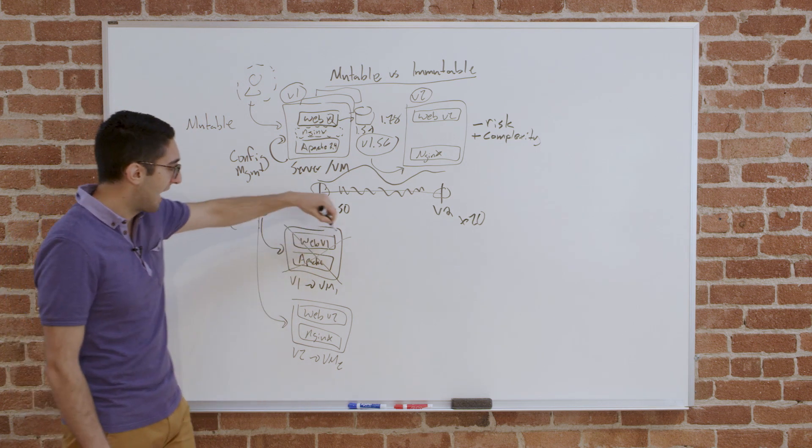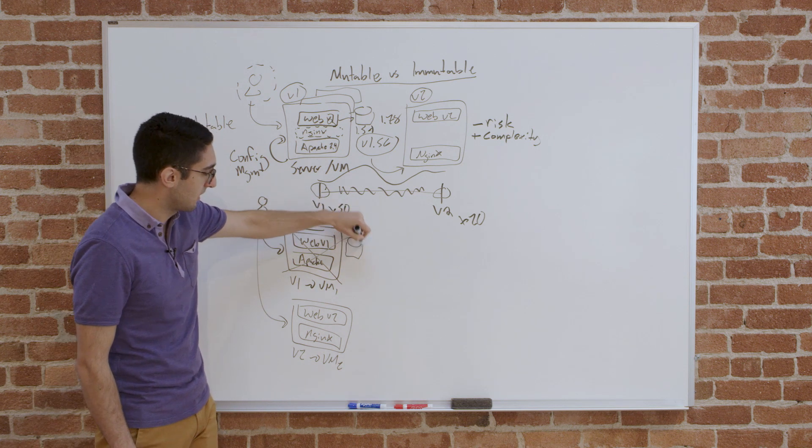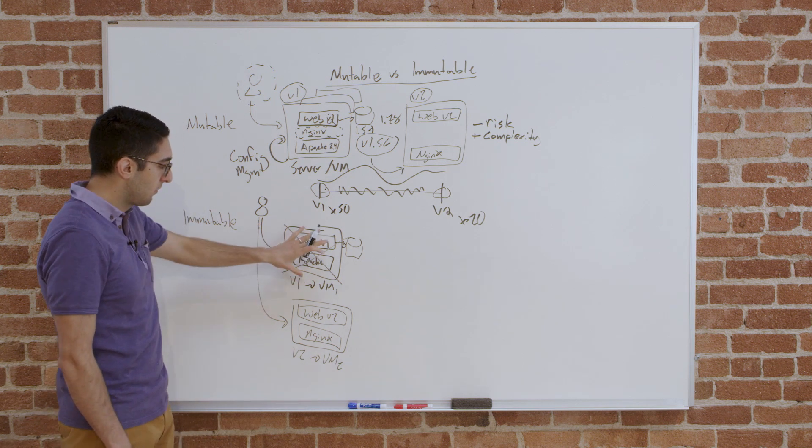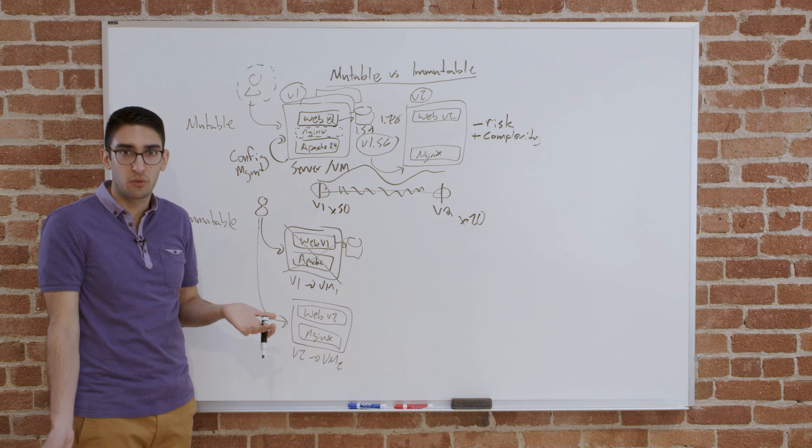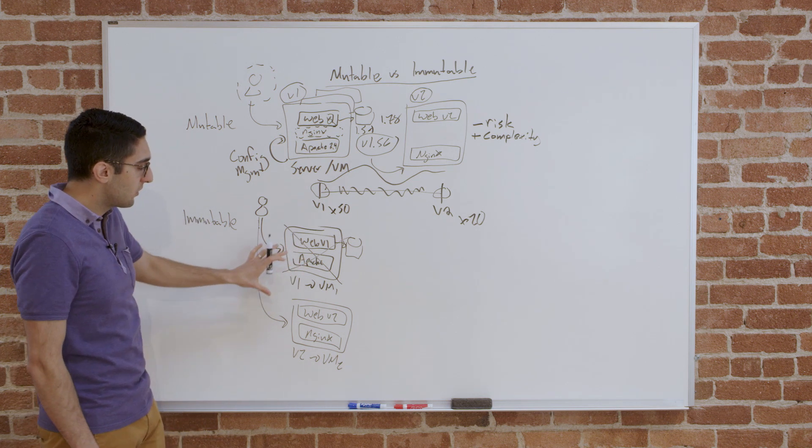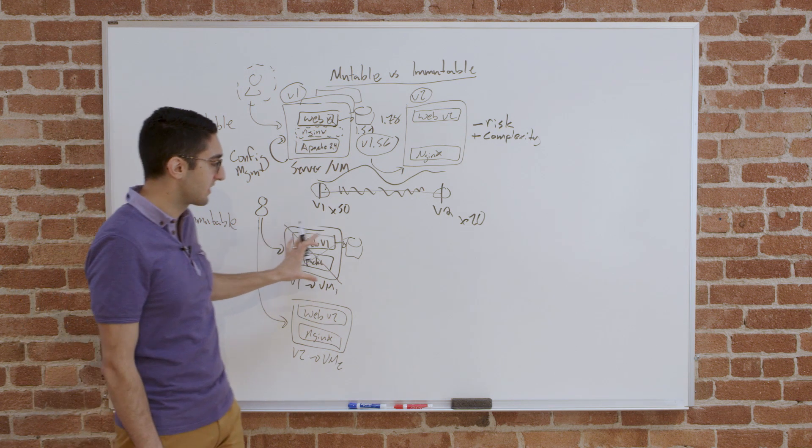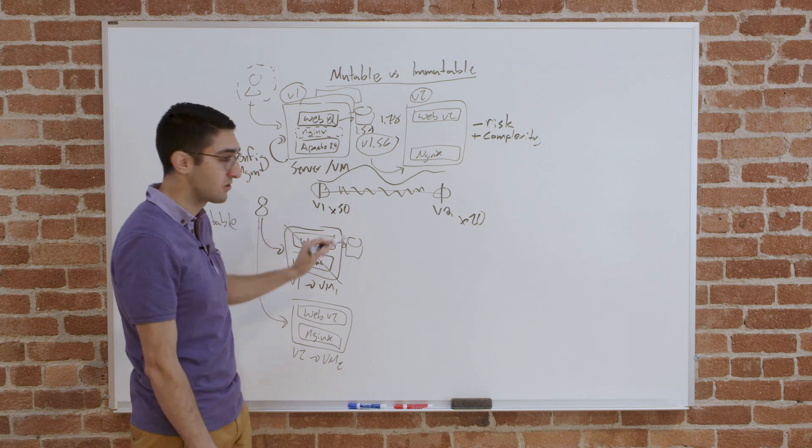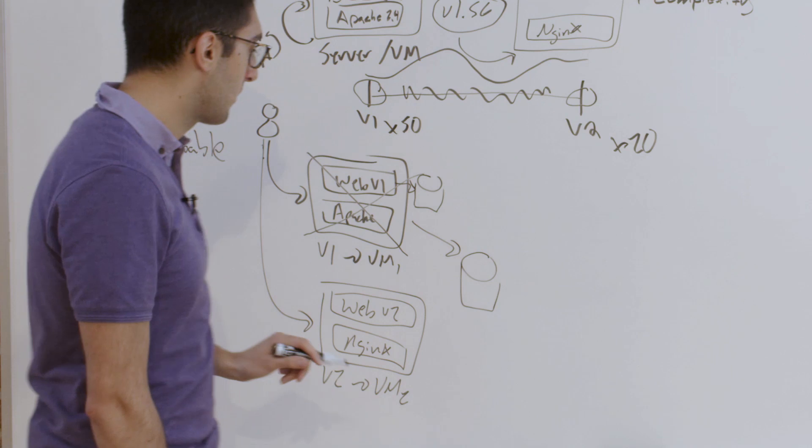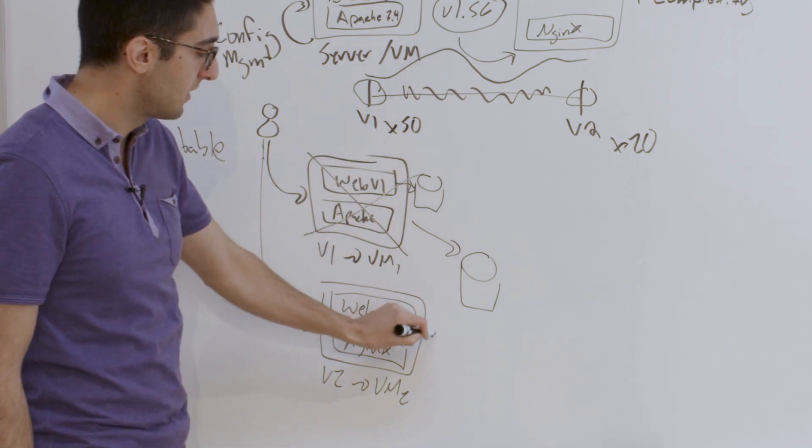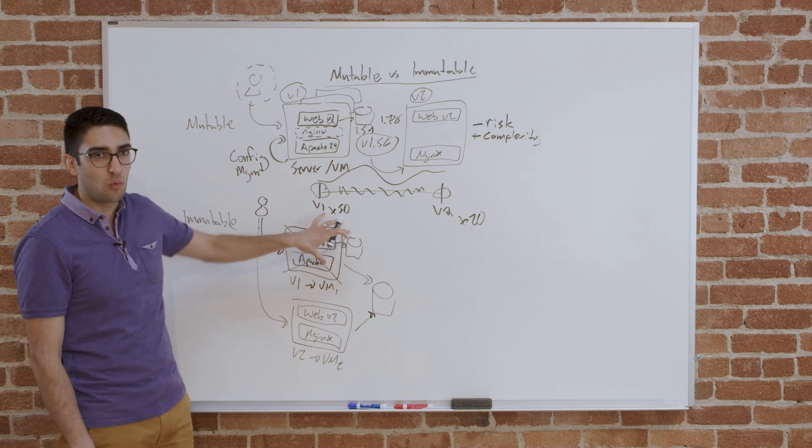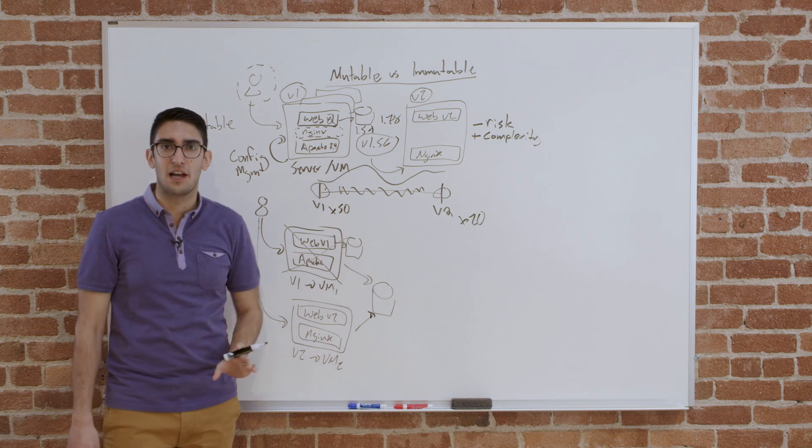Because what if this application had state? What if this app was writing to its local disk, it had data that mattered to the application? Well, here what we said is create a new machine, delete that machine, including its data, including its disk. So that clearly doesn't work. So to make this effective, what you generally need to do is externalize the data. So instead of it being on box with the same application, maybe I use an external database that's shared. So my first VM is writing to the database, but it's the same one that my second one is using. So as I make this transition, I don't have to worry that I'm destroying the data on this box, because I've externalized it.